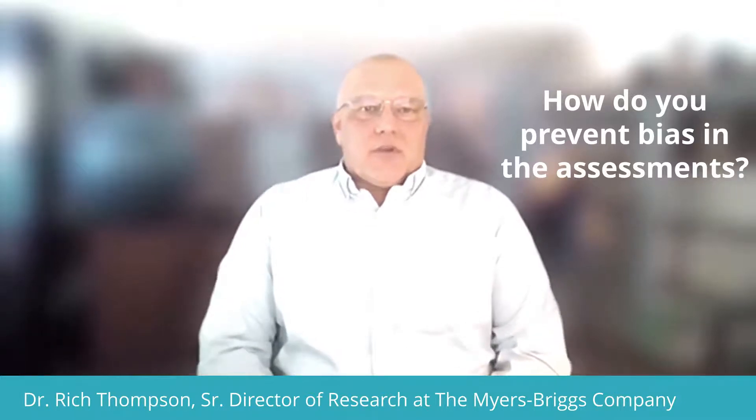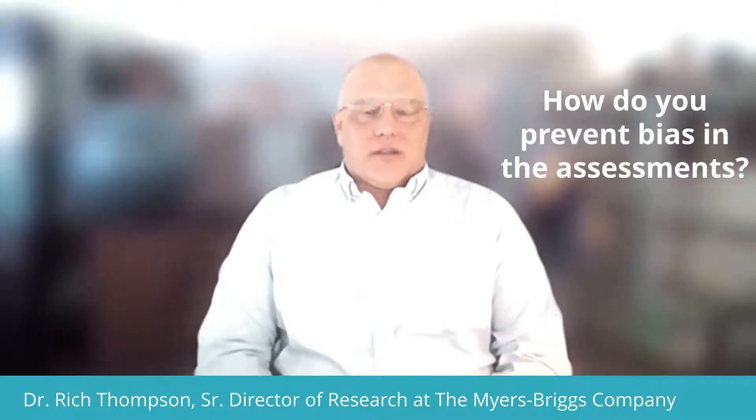At the Myers-Briggs company, when we're evaluating or developing an assessment, we try to do a number of different things to ensure that there is as little bias as possible. Part of that has to do with the samples that are collected and examined. Part of that involves looking at different kinds of item differences that might be occurring for different groups of people. And finally, it's looking at group differences in terms of reliability, validity indicators, and actual results of the assessment.